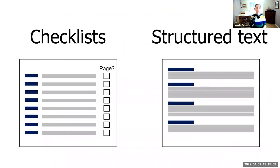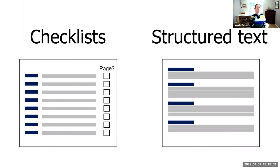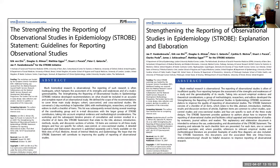The checklist is often accompanied by explanations of why items are important and examples of good reporting. On screen you can see item one of STROBE — for cohort, cross-sectional, and case-control designs — which says the study design should be indicated with a commonly used term in the title or abstract. It gives an example: 'Leukaemia incidence among workers in the shoe and boot manufacturing industry: a case-control study,' and explains this helps with correct indexing in electronic databases. These explanation and elaboration (E&E) documents are a really valuable resource.